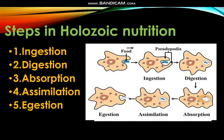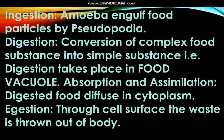The holozoic mode of nutrition involves five steps: ingestion, digestion, absorption, assimilation, and egestion. Now, how does nutrition occur in amoeba? Amoeba is a small organism — it has pseudopodia. Pseudopodia means false feet.